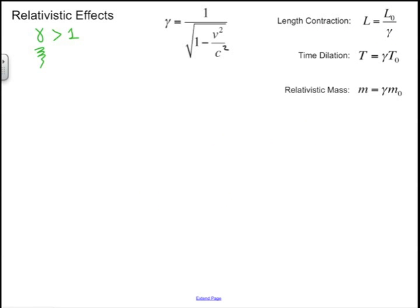Also very interesting is time dilation. If I put a clock on an object that's moving — and we've actually experimentally tested this — that clock is going to run, but according to the stationary observer, it appears to run slow. If gamma was 2, and you were sitting on the fast-moving object, perhaps a rocket ship, you might see 1 minute go by, but the stationary observer would see 2 minutes go by.